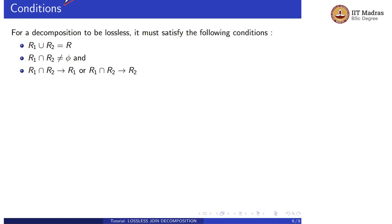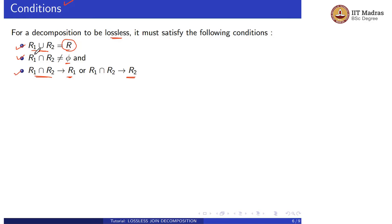These are the conditions to determine whether decomposition is lossy or lossless. For decomposition to be lossless, it must satisfy: (1) R1 union R2 must equal R, (2) R1 intersection R2 should not equal the empty set, and (3) R1 intersection R2 must determine R1 or R1 intersection R2 must determine R2. If any one of these conditions is not satisfied, the decomposition is lossy.